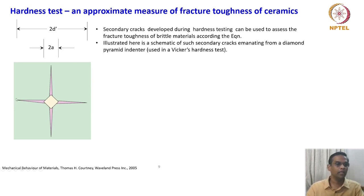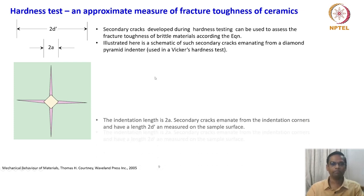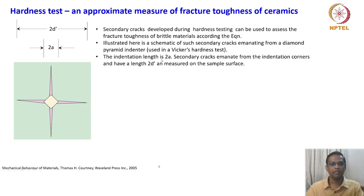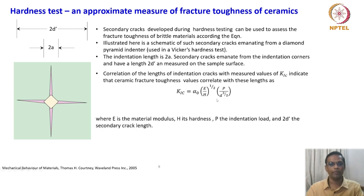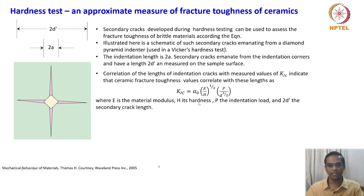This distance is 2a and the end-to-end two crack ends are measured as 2d prime. The indentation length is 2a, basically a diagonal length, and secondary cracks emanate from the indentation corners and have the length of 2d prime as measured on the sample surface. Correlation of the lengths of indentation cracks with measured values of K1c indicates that ceramic fracture toughness values correlate with these lengths as K1c = α₀ · (E/H)^(1/2) · (P/d)^(3/2), where E is the material modulus, H is its hardness, P is the indentation load, and 2d prime is the secondary crack length.